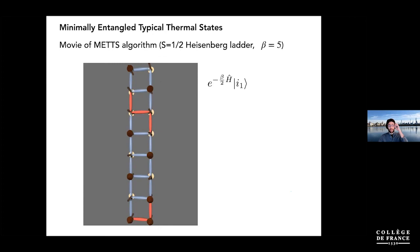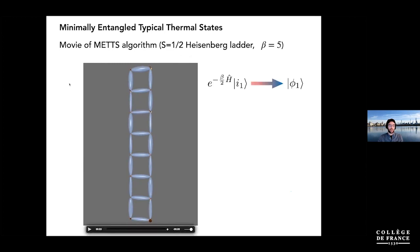Here's the movie showing thermalizing the first state and making the first METS state. Because this is at pretty low temperature, it resembles the ground state — even though it's just one pure-state shard of the density matrix. These quantum states, even though they just look like an animation, are actual powerful computational tools.